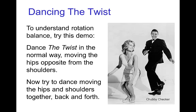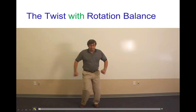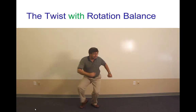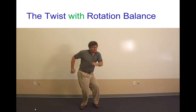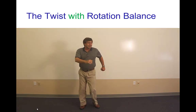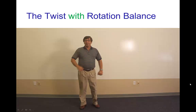A good way to experience this first hand is to try dancing the Twist. In the Twist, you normally swing the shoulders opposite from the hips. So let's see what it looks like to dance the Twist the normal way — moving the upper body opposite, out of phase with the lower body. And in fact, this is relatively easy to do. You're basically pushing with the upper body off against the lower body.